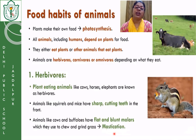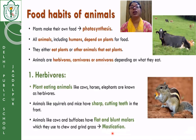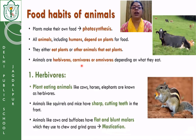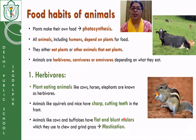Today we finish here. We have studied different plant products we use in our food, different animal products we use as food, and on the basis of food habits there are three categories of animals: herbivores, carnivores, and omnivores. Herbivores are plant-eating animals with sharp front teeth and flat, blunt molars. Thank you, children. Have a very nice day ahead.